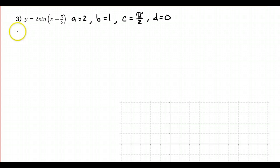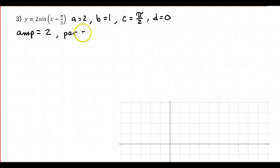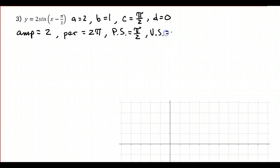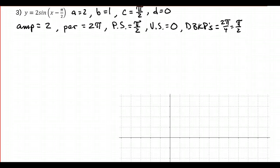Once we have a, b, c, and d, we can find the amplitude. Amplitude is absolute value of a, which is 2, so it's going to be stretched a little bit taller. Period is 2π over b, so 2π over 1, which is 2π — same as the other examples. Phase shift is c over b, so π over 2 divided by 1, which is π over 2. The graph is shifting π over 2 units to the right. No vertical shift because d is 0. Distance between key points is 2π divided by 4, which is π over 2 — same as the other problems.